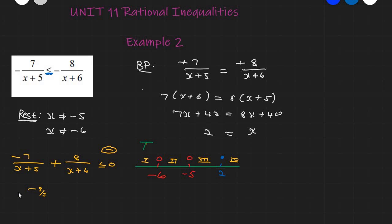For Region 2, I test X = −5.5. Going back on the calculator, I enter negative 5.5 into both fractions. The answer is 30, which is positive — so this region is FALSE.